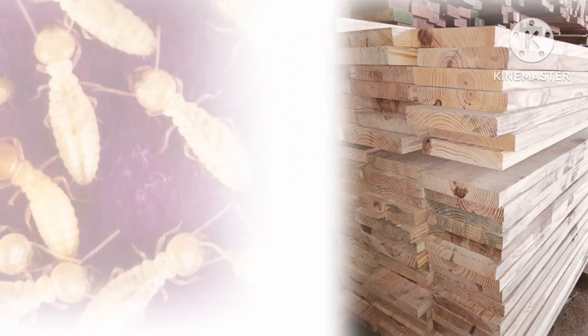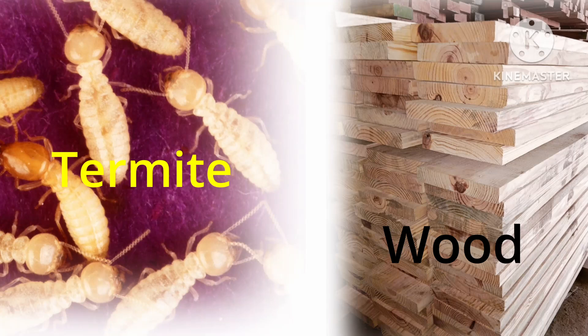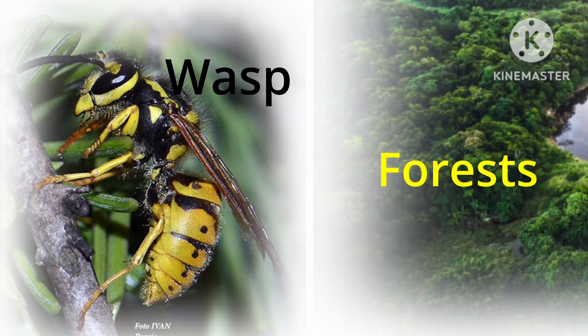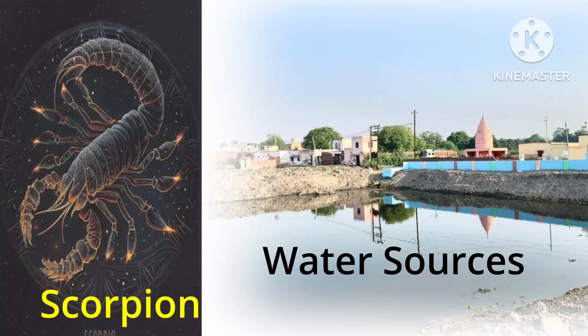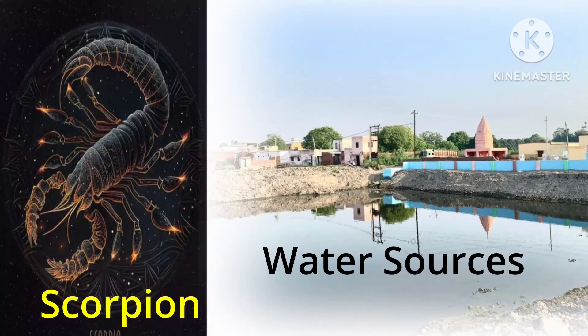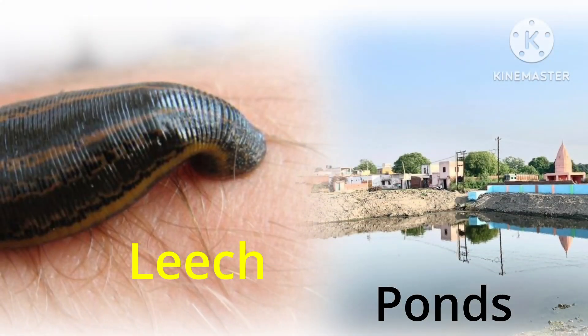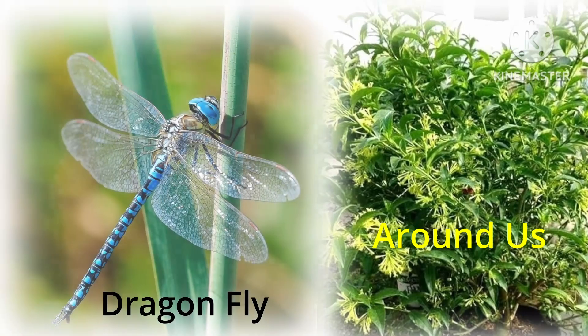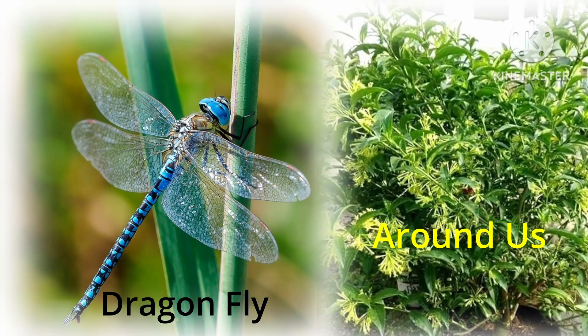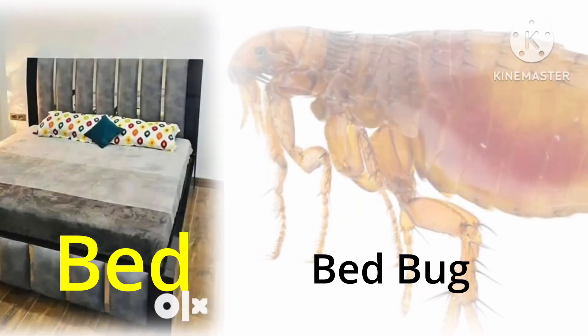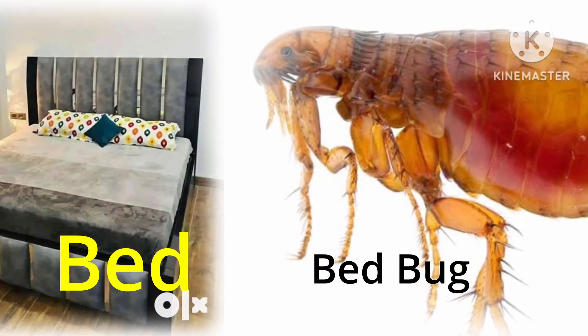Termite lives in wood. Wasp lives in forests. Scorpion lives near water sources. Leech lives in ponds. Dragonfly lives around us. Bedbug lives in our beds.